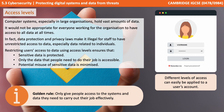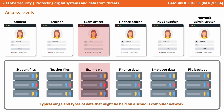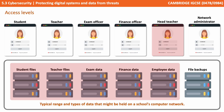The golden rule is: only give people access to the systems and data they need in order to carry out their job effectively. For example, teachers may only be able to access information on their home drives. The exams officer has no real need to access the students' or teachers' home drives, but does need to access all the exam data. The finance officer doesn't need access to any of the previous information, but does need to access all the financial data and details about employees in terms of pay and overtime. A senior leader or head teacher has a much broader access, allowing them to access data from across the organisation. And the network administrator has access to everything, including all the file backups.